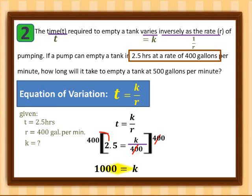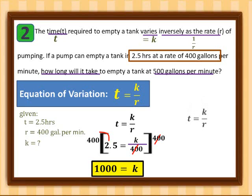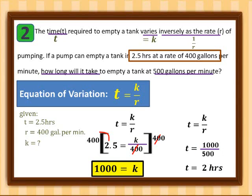Now, how long will it take to empty the tank at 500 gallons per minute? Using t equals k over r with k equal to 1,000 and rate equal to 500, we get t equals 1,000 over 500, which is 2 hours.